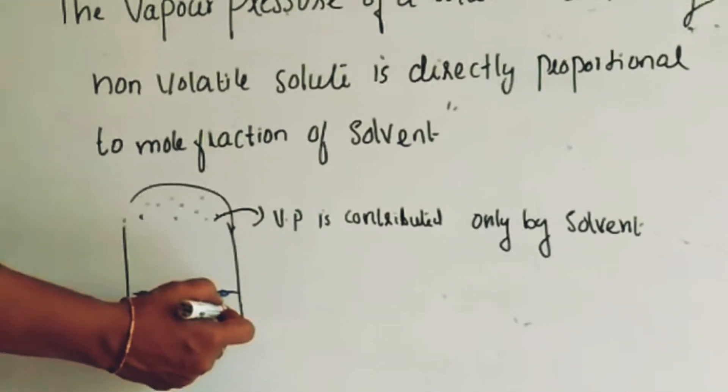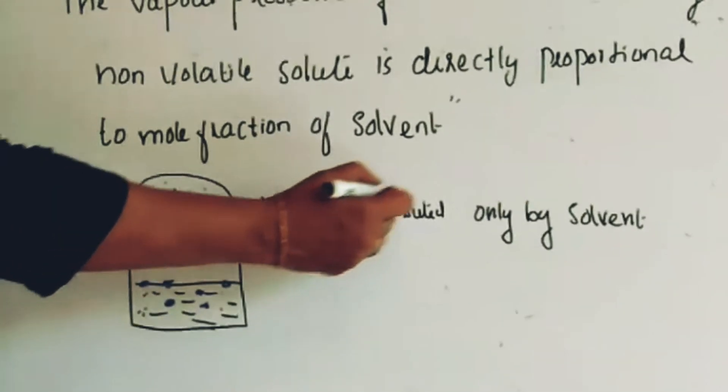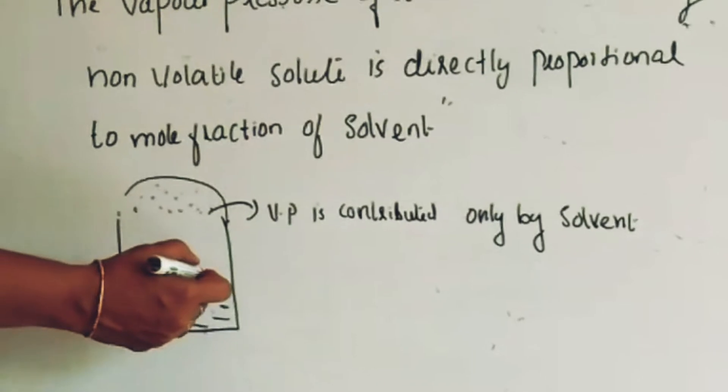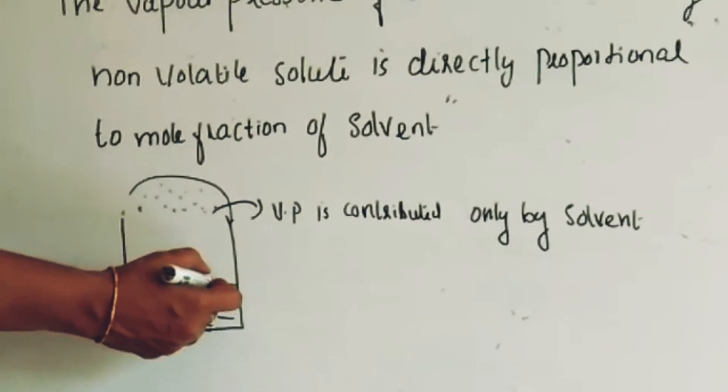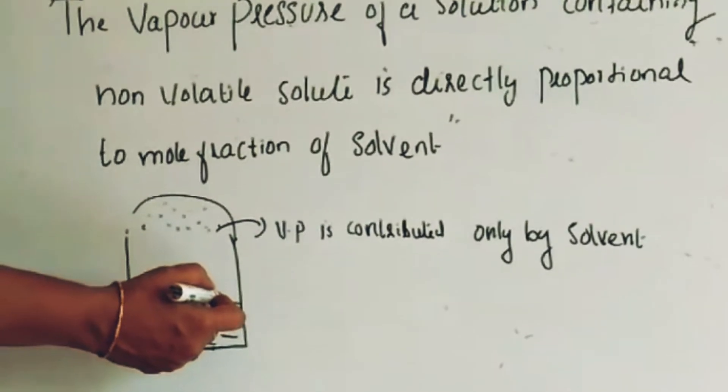Suppose this black is the volatile component. And all the dots that I have shown here is the vapor pressure contributed only by the solvent. The solute is not contributing to the vapor pressure because it is non-volatile in nature.